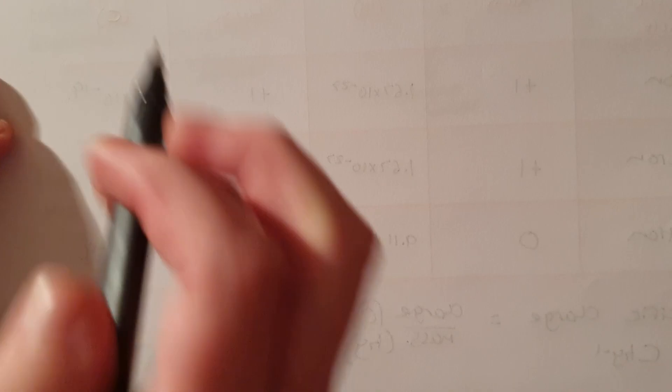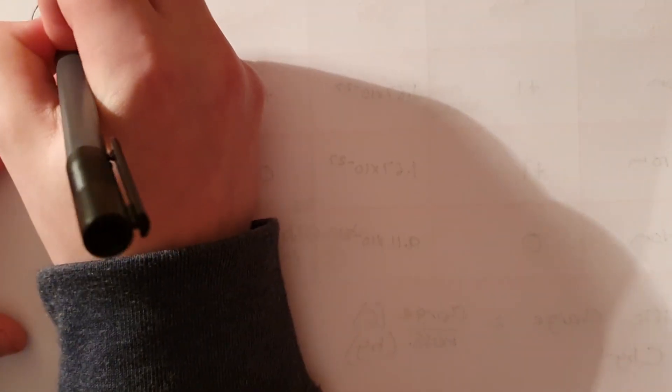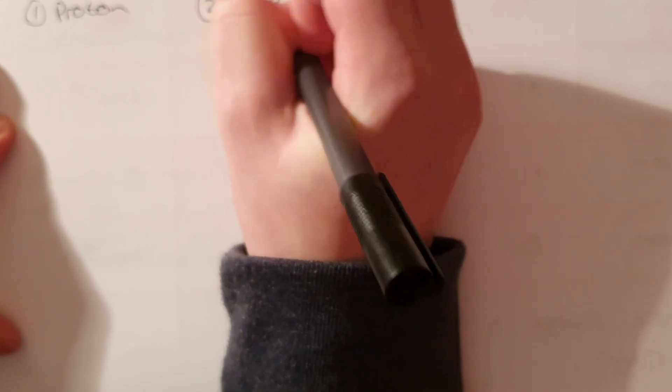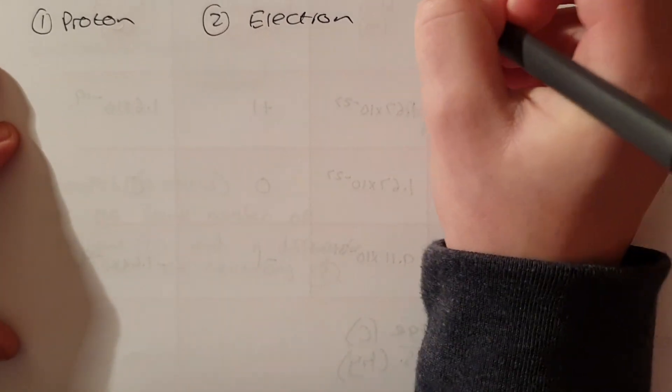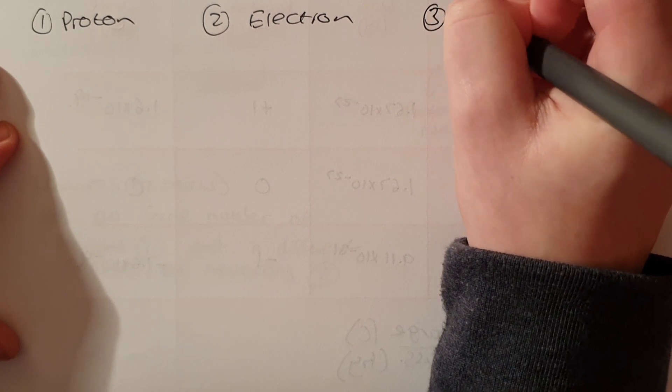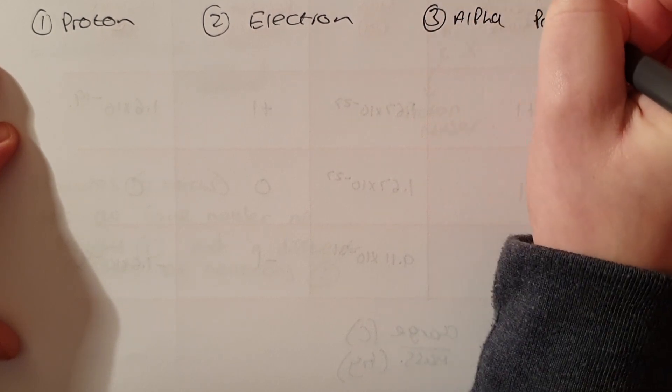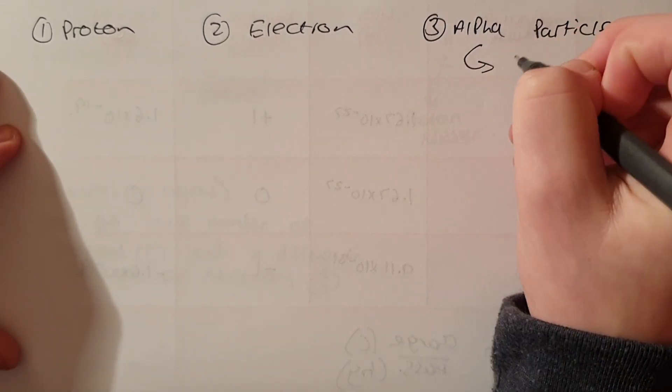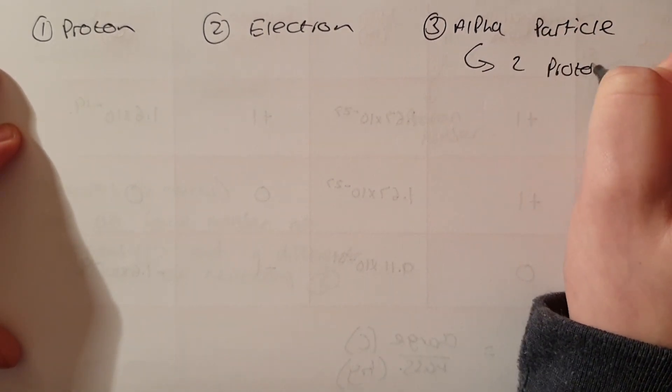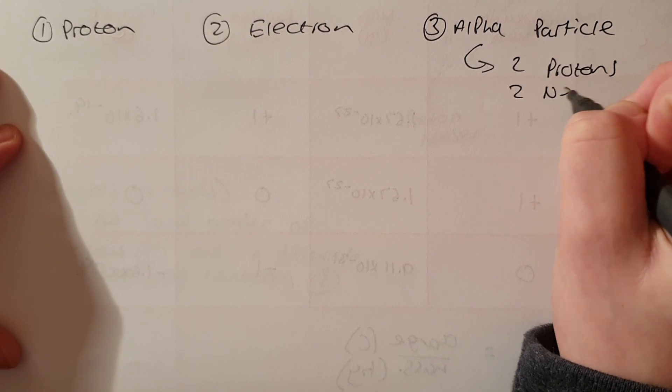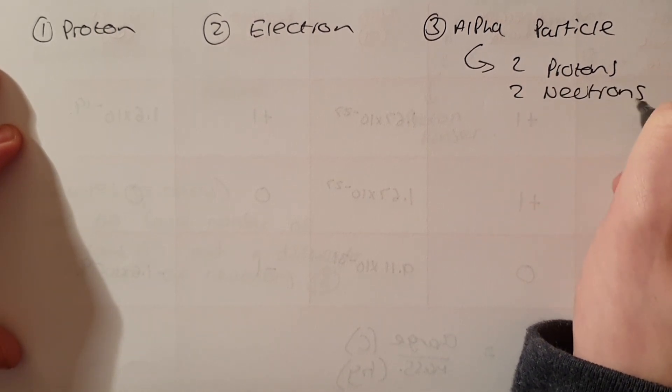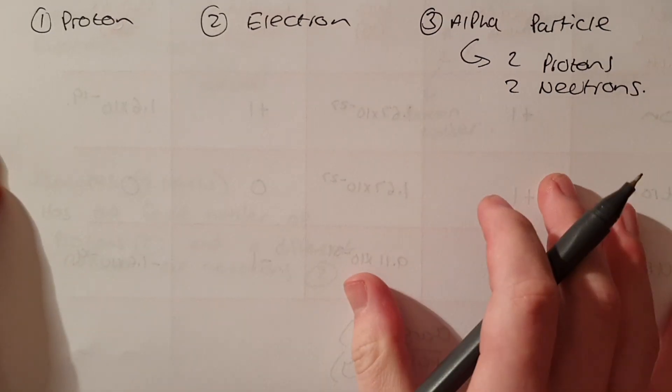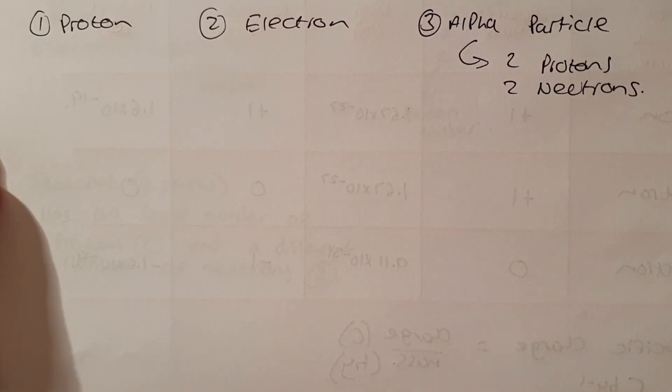So we're going to focus on three examples today. We're going to focus on the proton, the electron, and we're also going to have a look at an alpha particle. Now before I go any further let's just think about an alpha particle. An alpha particle has a structure of two protons and two neutrons. That'll be important for later. I will go through question one with a proton. If you then want to have a look at the electron and alpha particle please pause the video.